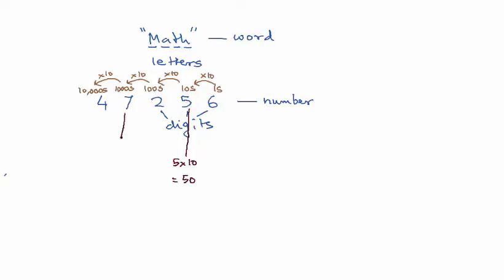Similarly, if you look at this 7, it's in the thousands place so the 7 is not actually the number 7. It's only a digit in the number and it represents 7 thousands or 7 times 1000 which is 7,000.